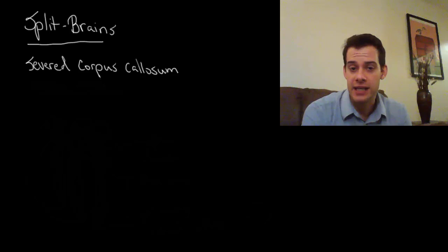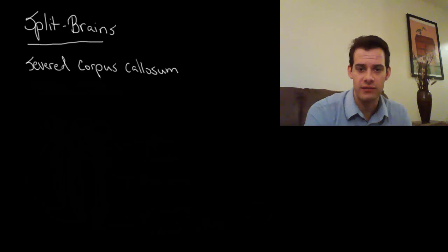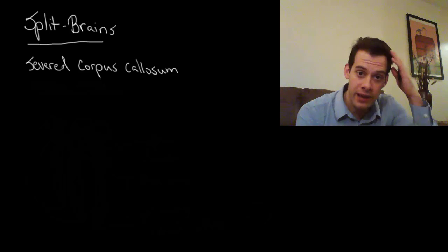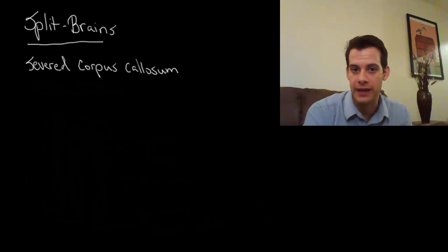So Sperry did this initial work on these hemispheric specializations. These certain tasks that are specialized in either hemisphere. So what are these specializations and how do split brain patients reveal them? So the first specialization, the most important for these split brain studies, is the idea that language for most people occurs mostly in the left hemisphere. And speech production occurs mostly because of activity in the left hemisphere. So this area in the left frontal lobe called Broca's area that coordinates the movements for speech as well as other language processing areas are mostly in the left hemisphere.